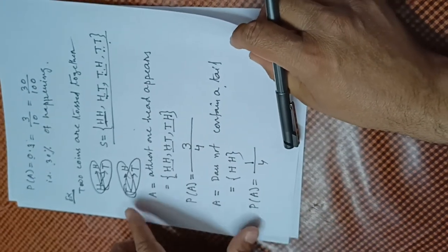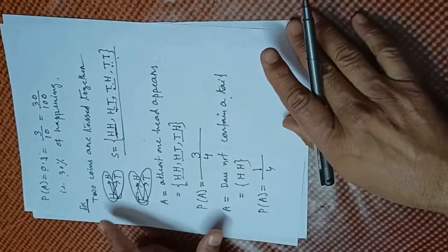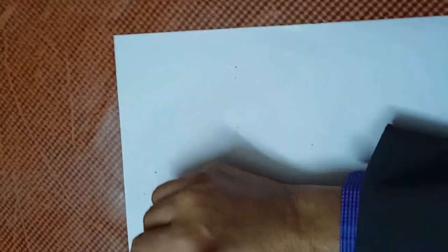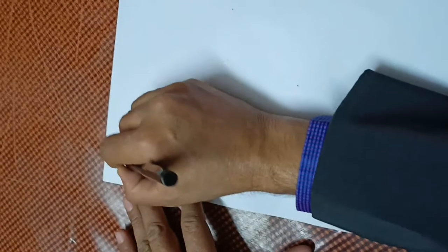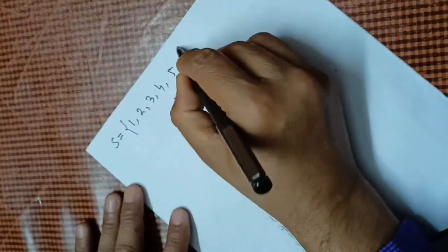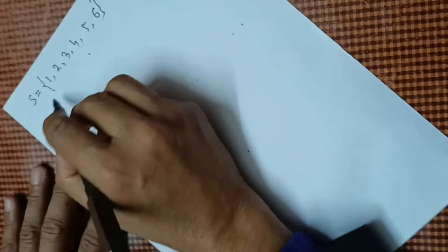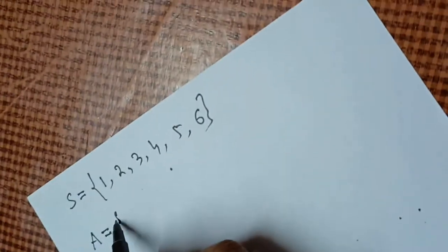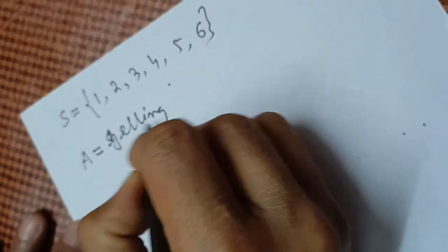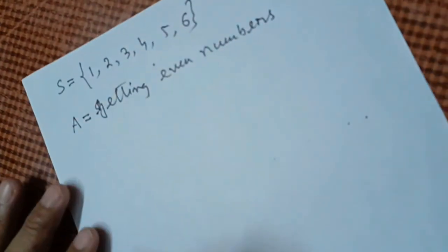In this way we can calculate the probabilities of different events for a given random experiment. Now let us consider another example: when a dice is thrown, the possible outcomes are 1, 2, 3, 4, 5, and 6. We consider three different events. One is getting even numbers.